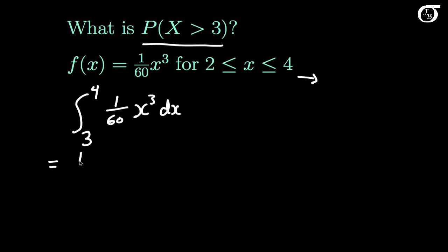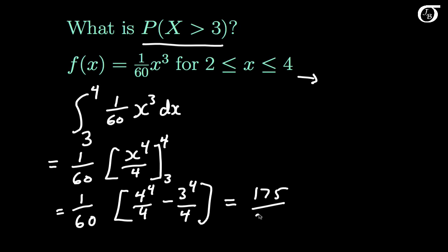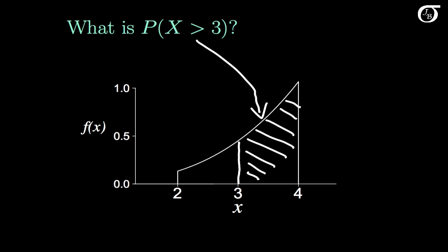This integral equals 1/60 times x to the 4th power over 4, evaluated between 3 and 4. So this is 1/60 times (4 to the 4th over 4 minus 3 to the 4th power over 4), which works out to 175/240, approximately 0.729. Back to the plot of the PDF — when we integrated that function, we found that the shaded area to the right of 3 is approximately 0.729.